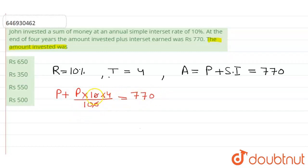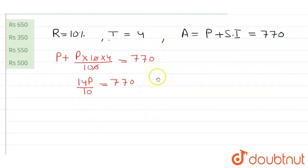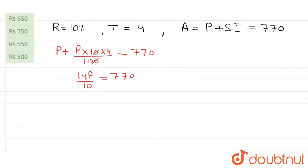So further, we got 14P upon 10 equals 770. So further, we got P equals 770 upon 14.